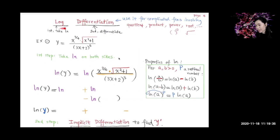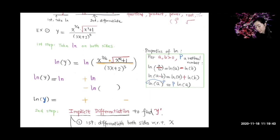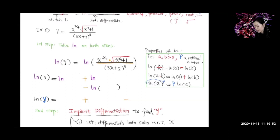The first step is to take ln — take ln on both sides of the equation. On the left side we still have ln of y. On the right side, remember to use the properties of ln: for A, B > 0 and P a rational number, ln of a quotient equals the difference of the two ln's; ln of a product equals the sum of the two ln's; and ln of A to a power P means P moves to the front to become P times ln(A).